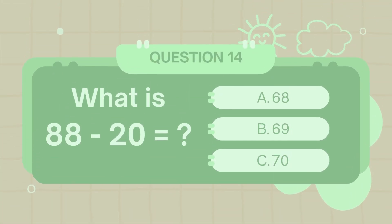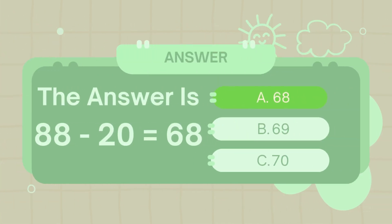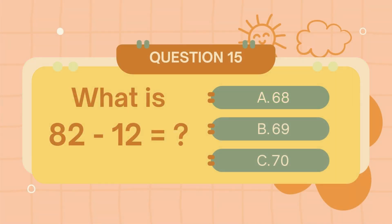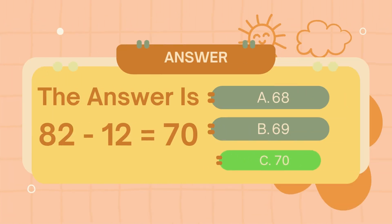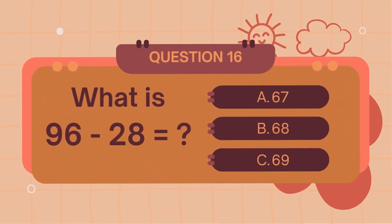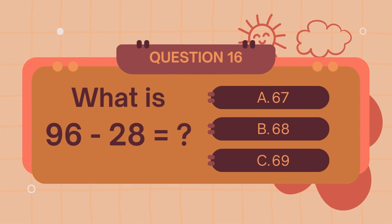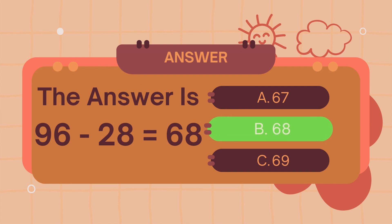What is 88 minus 20? The answer is 68. What is 82 minus 12? The answer is 70. What is 96 minus 28? The answer is 68.